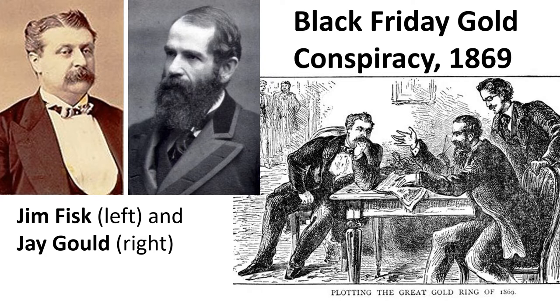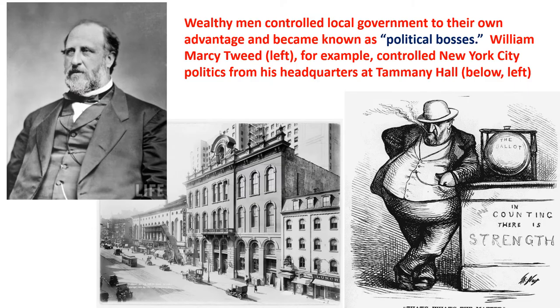In the Black Friday conspiracy, Jim Fisk and Jay Gould tried to corner the gold market — buy up all the gold, drive the price up, and then dump it. Wealthy men controlled local government to their own advantage and became known as political bosses. William Marcy Tweed controlled New York City politics from his headquarters at Tammany Hall.